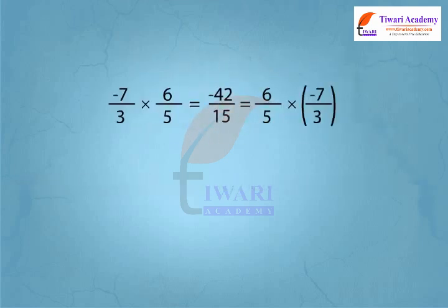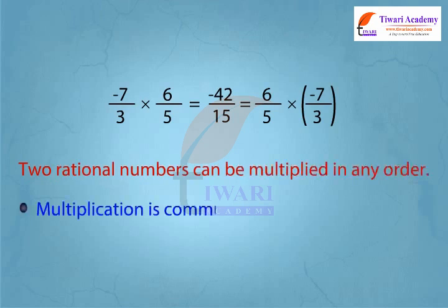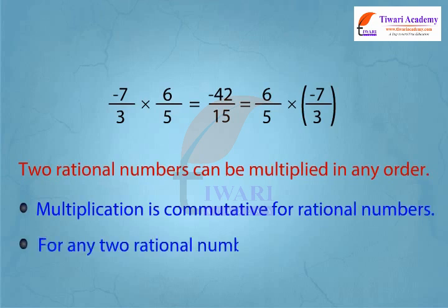Let us now see the product of two rational numbers. Two rational numbers can be multiplied in any order. Therefore, rational numbers are commutative under multiplication. That is, for any two rational numbers a and b, a into b is equal to b into a.